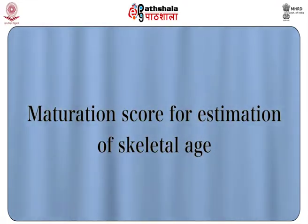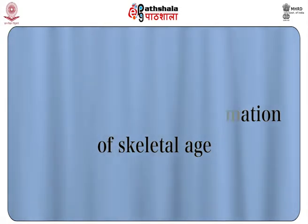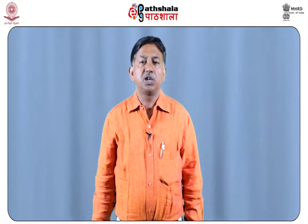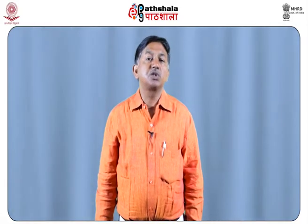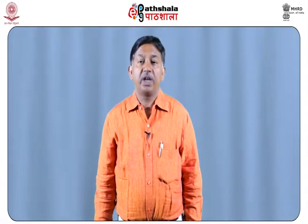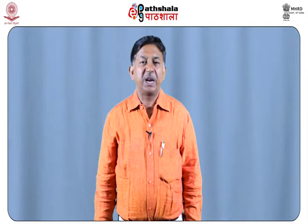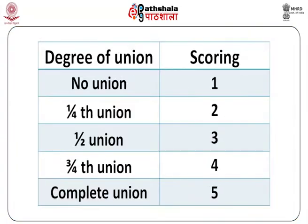The maturation score for estimation of skeletal age: to minimize errors of epiphysial union, Mackern and Stewart in 1957 suggested a scheme of scoring involving 7 combinations of various segments. The total score is applied to a prediction equation for more accurate estimation. The scoring is based on the degree of epiphysial union: no union scores 1, one-fourth union scores 2, half union scores 3, three-fourth union scores 4, and complete union scores 5.